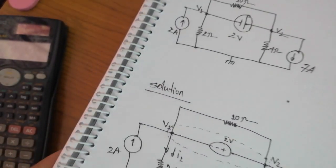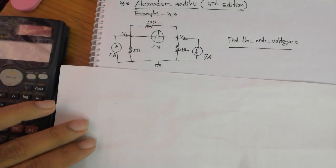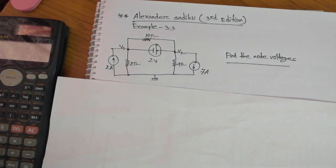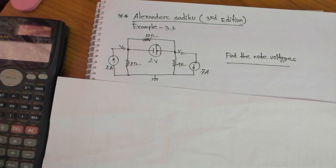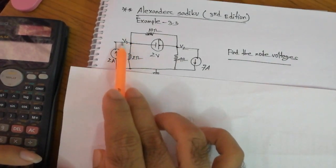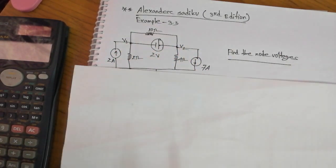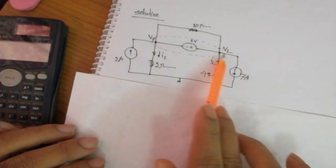I am going to talk about this method. This is the 3rd edition, Example 3.3. Let me start with this circuit — this circuit finds node voltages. Let's go back to the node and do node analysis. The node is known to be a 3-node circuit.